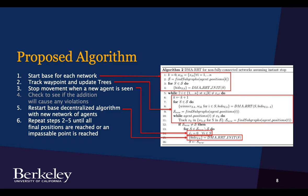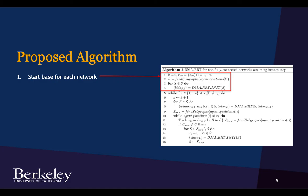So now taking that base and the delta obstacle idea, we can create a proposed algorithm that will be safe. For this proposed algorithm, we're going to take each subgraph, so that grouping of agents that can communicate with one another, and go ahead and initialize DMA RRT.